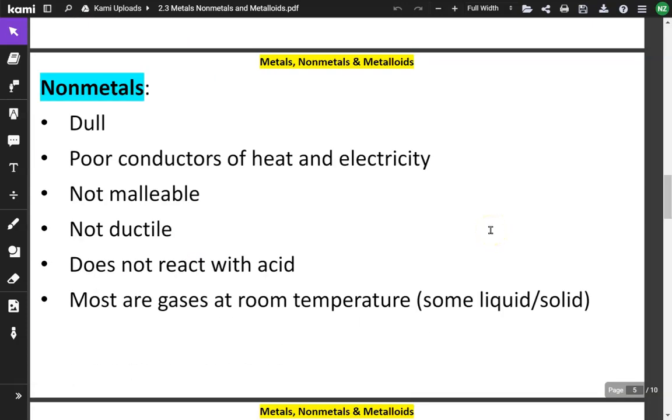Non-metals are pretty much the opposite of metals. They're dull. Instead of being shiny, they're dull. They're poor conductors of heat and electricity. They're not malleable. When you try to press on them, they'll break. They'll crumble. They're not ductile. They usually do not react with acid.